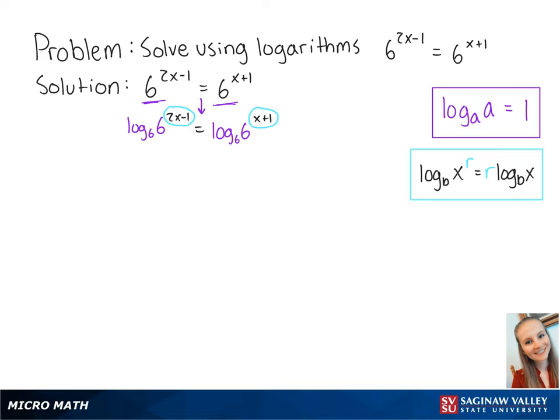we're going to use this next property to get us 2x minus 1 times log base 6 of 6 equals x plus 1 times log base 6 of 6. Since log base 6 of 6 is equal to 1,